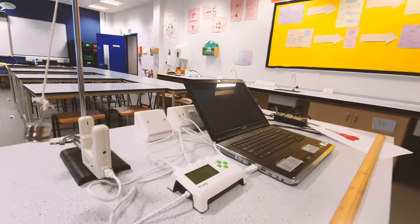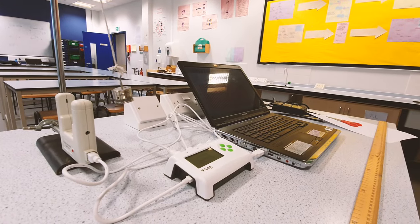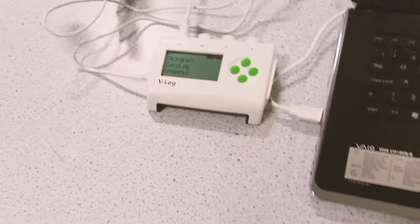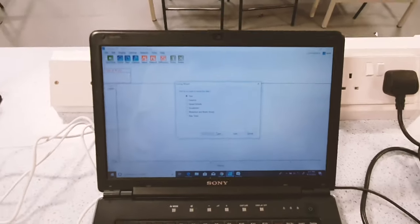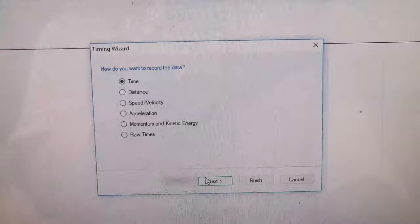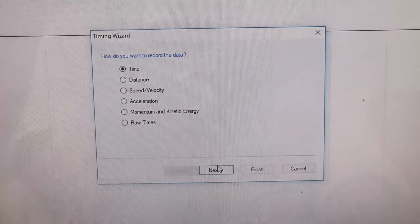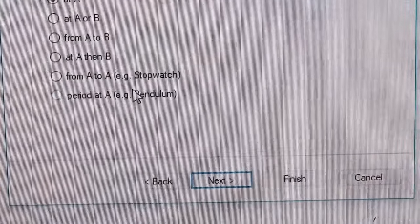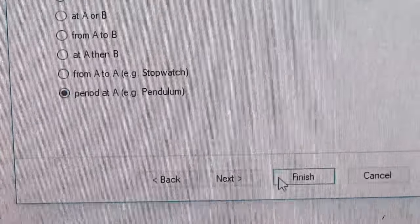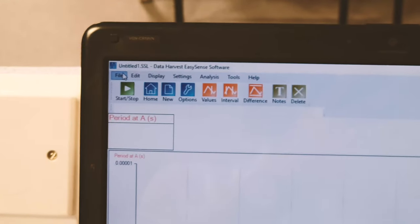This is just using an ordinary school LightGate, a Data Harvest one, and this VLOG system, which thank you very much to Data Harvest for loaning to me. I'm still using the old software here, but essentially what you need to do when you set it up is measure the time. You want a pendulum setting, so it's measuring the time period, and then you can just click Finish.